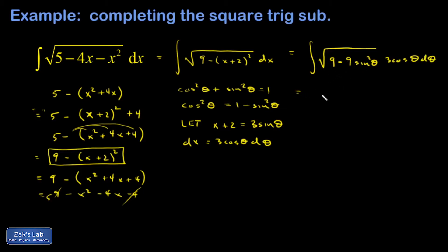I'm going to factor out a 9 out of the square root, which gives me a 3, and I have the square root of 1 - sin²θ, which is the square root of cos²θ, times 3cos(θ)dθ.